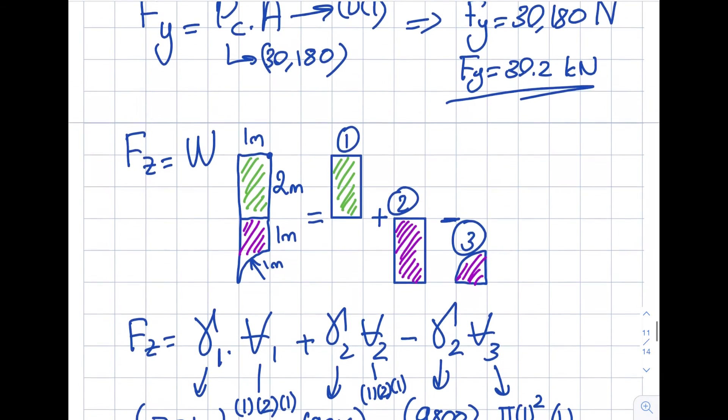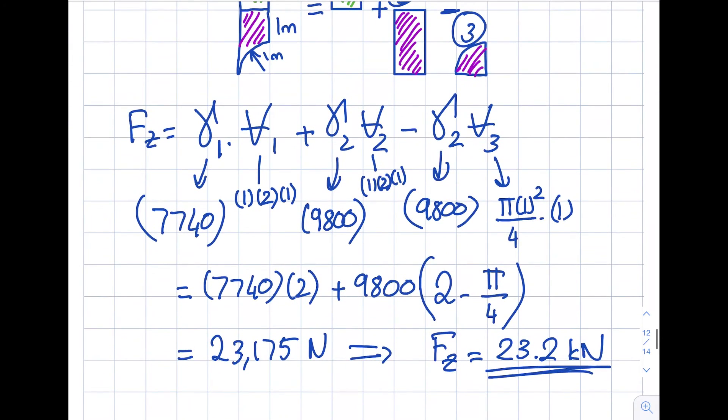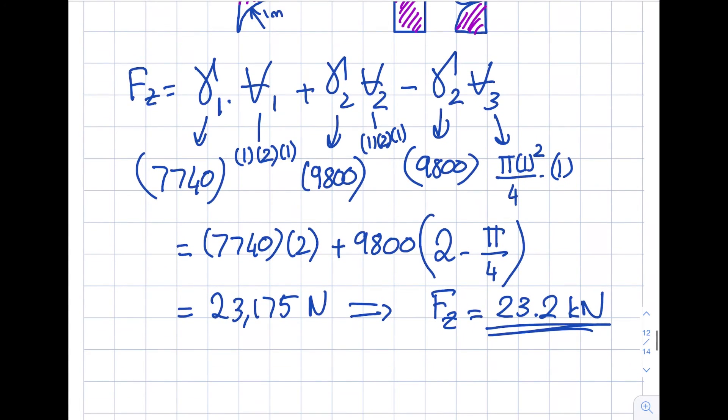So looking over here, this was 30.2, this was 23.2. So note that they are not the same, right? If you use that 45-degree angle, so there is no relation like that for a circular shape. So then at the end of the day my FP is going to be this: FP will be 30.2 kilonewtons in the j-direction minus 23.2 kilonewtons in the k-direction. So this is my final answer.